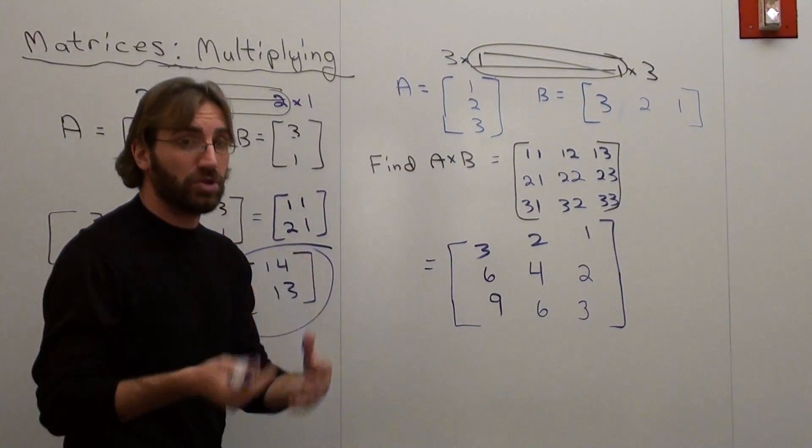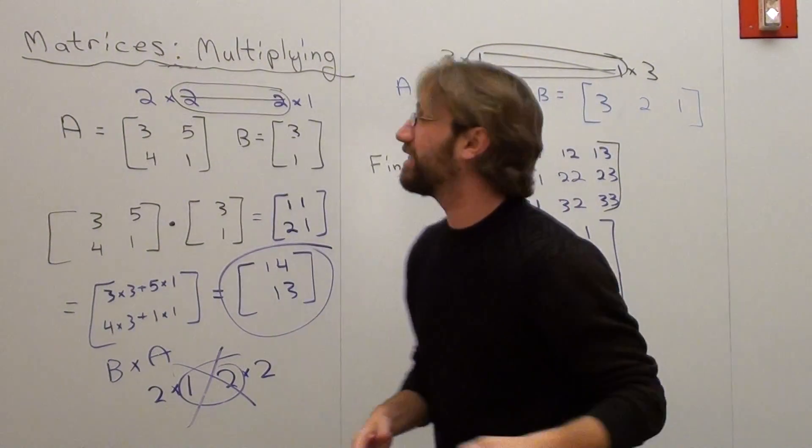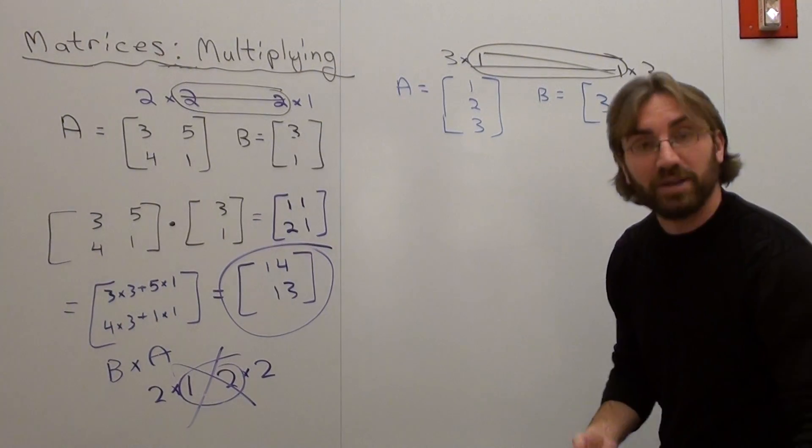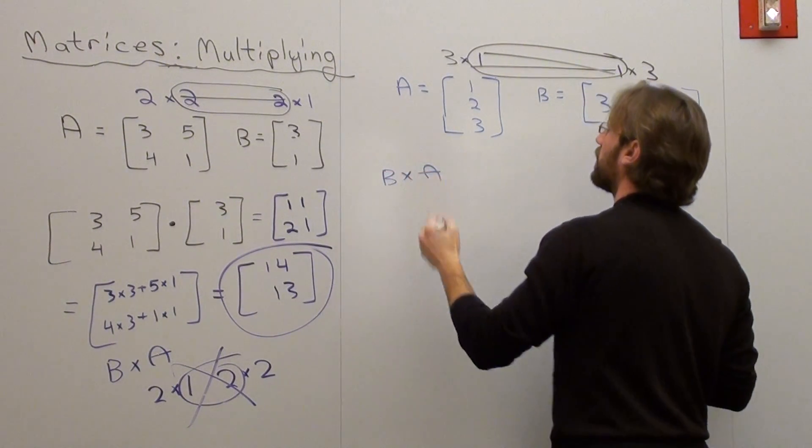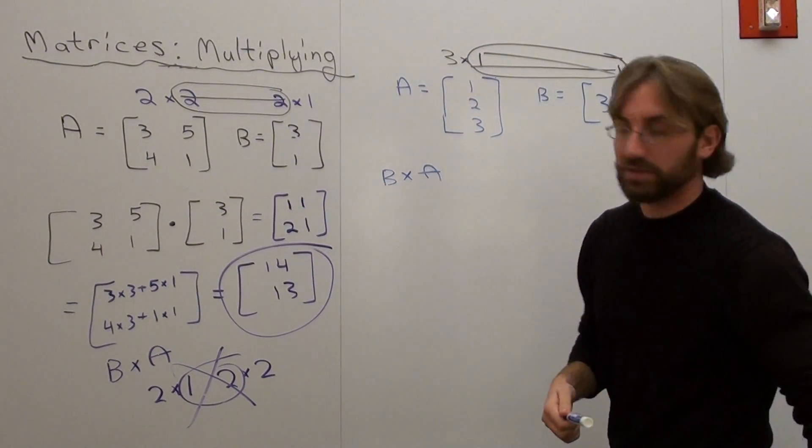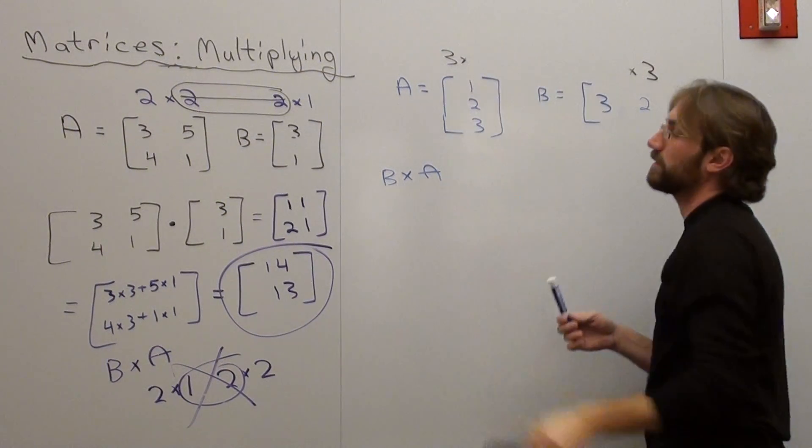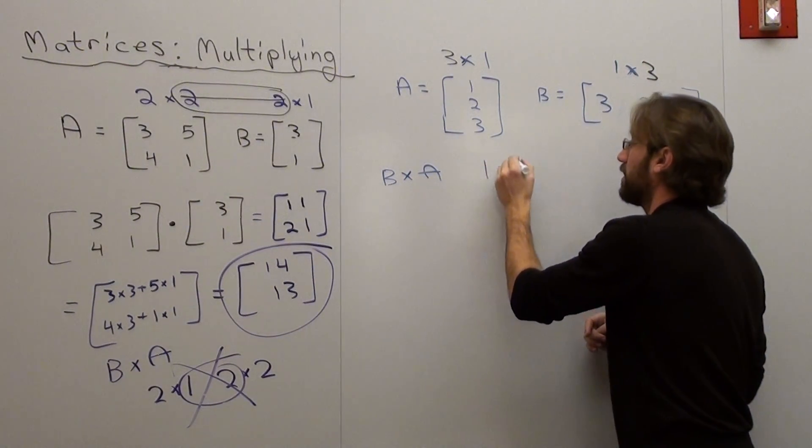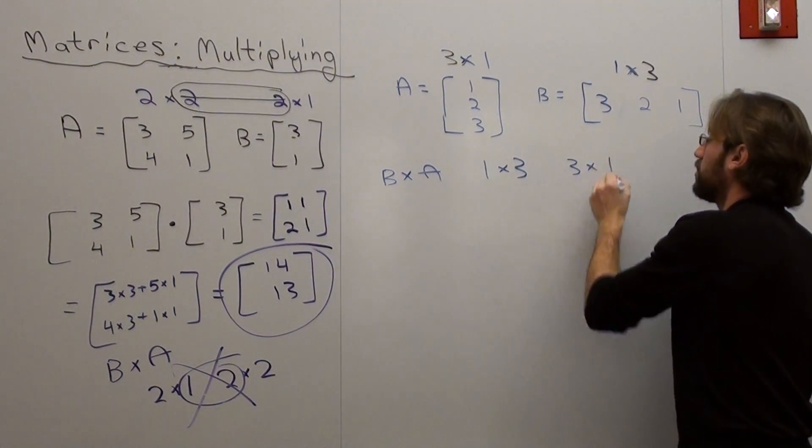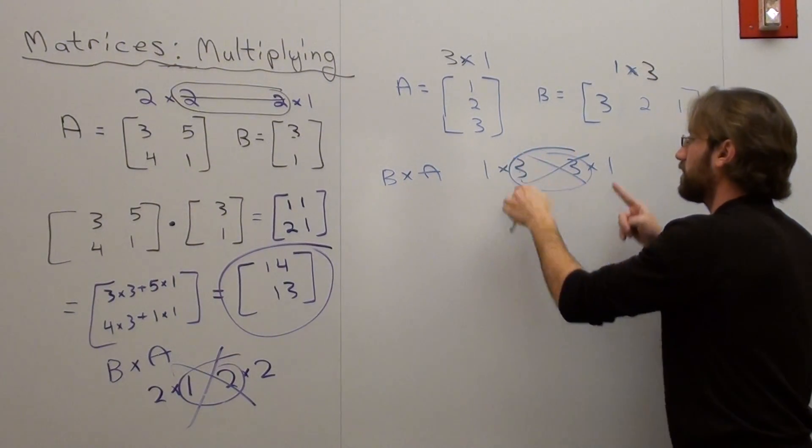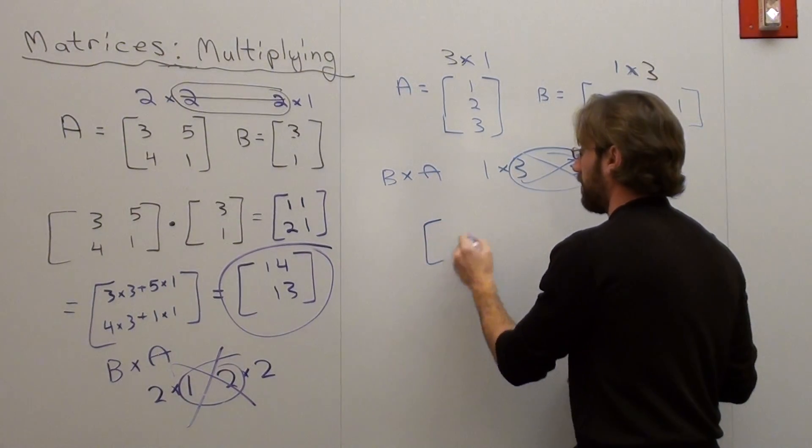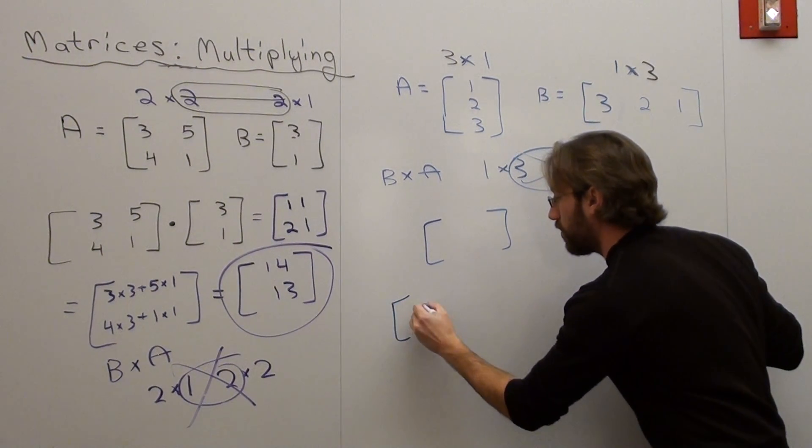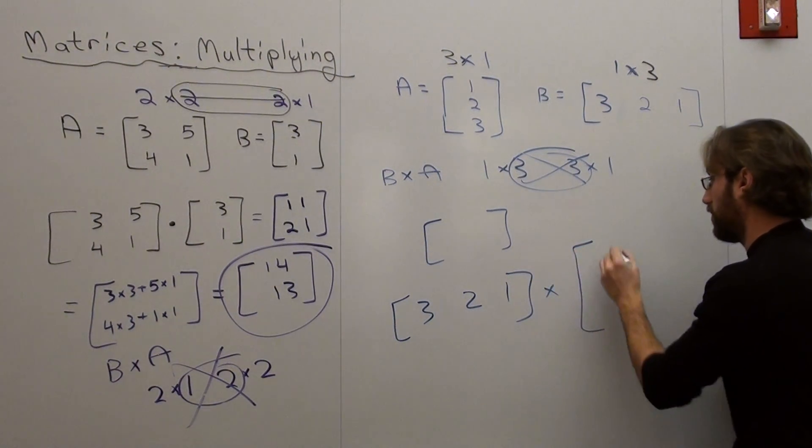I want to do one more problem with this, because I think it's really cool. Instead of finding A times B, I'm going to see if I can find B times A. Can I take this matrix, which is 1 by 3, and multiply it by A, which is 3 by 1? Do the inside numbers match? Yes, they do. Cross them out. I'm left with a 1 by 1 matrix. That's going to be my answer. It's going to be one element. That's all.